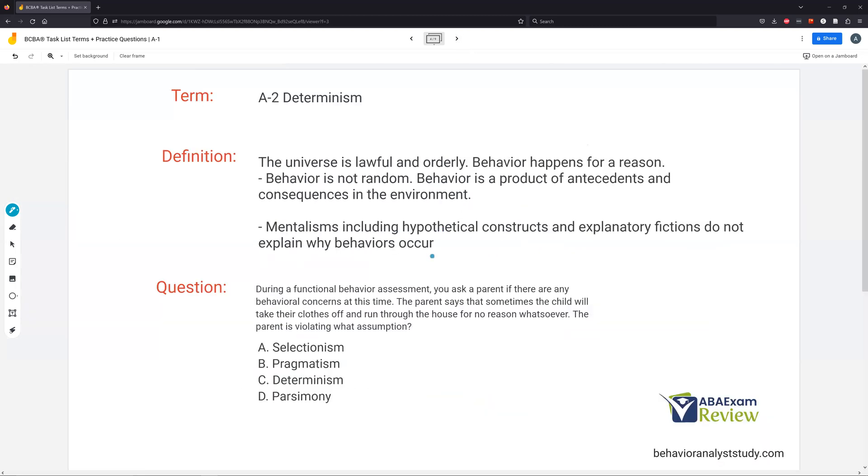Determinism. Universe is lawful and orderly. Behavior happens for a reason. This one is extremely important for parent training. What do parents love to say? Parents love to say, well, behavior happens out of nowhere. Behavior happens for no reason. I don't know why they do this. There's no reason for it. We know there is. The universe is lawful. It's orderly. Behavior is not random. Behavior happens, antecedents, and consequences. Antecedents evoke. Consequences control those future occurrences.